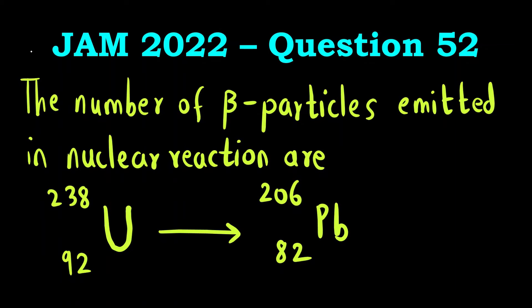Hello everyone. Welcome to Chemezone Complete Chemistry. In today's video we are going to solve question 52 that was asked in the JAM 2022 paper. The question is: find the number of beta particles emitted in the nuclear reaction where Uranium-238 gives lead, Pb-206.